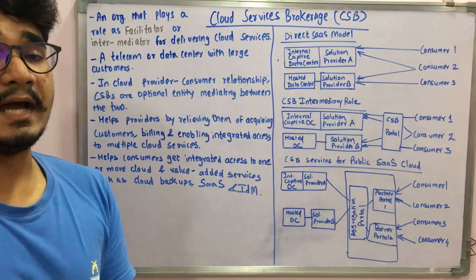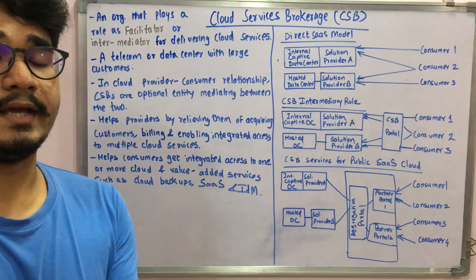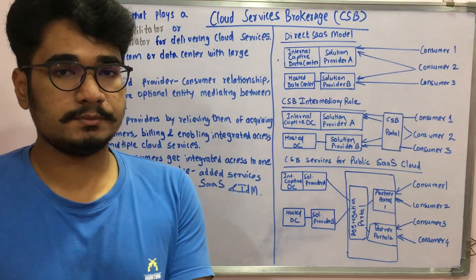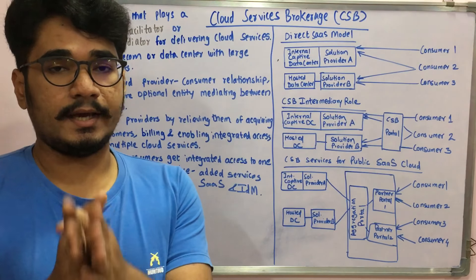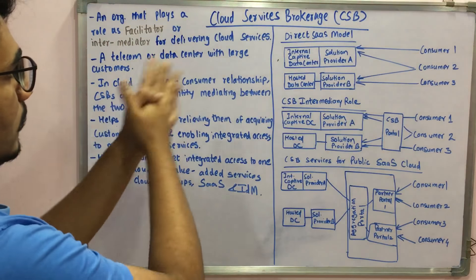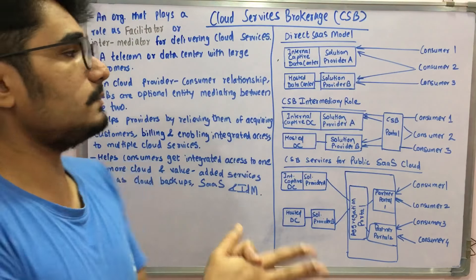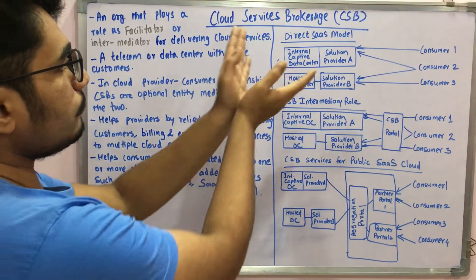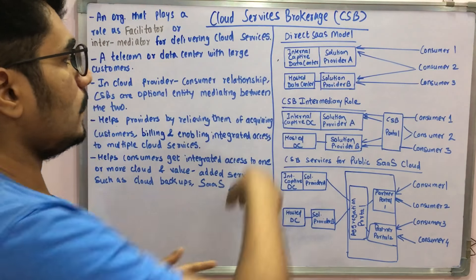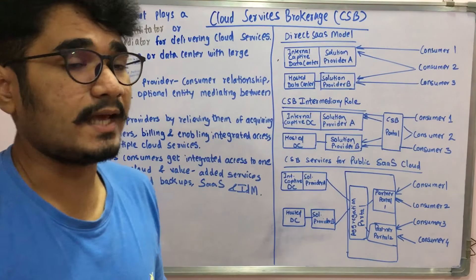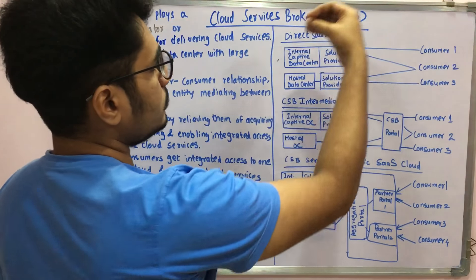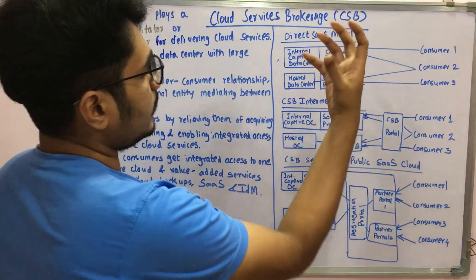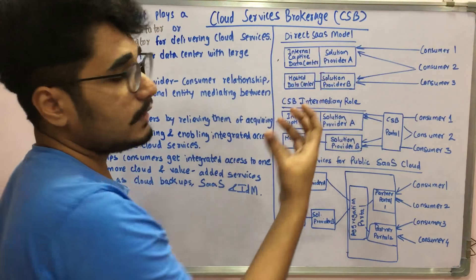CSB helps consumers get integrated access to one or more value-added services (VAS), such as cloud backups, the SaaS model (Software as a Service), and IDM — Identity Management — which is used for security purposes, including Federal Key Management (FKM). These are the roles and ways in which a CSB facilitates cloud services.